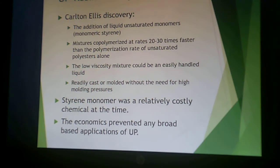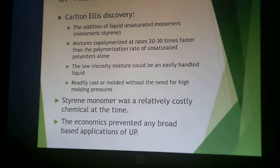Along came Carlton Ellis, who added liquid unsaturated monomers — specifically monomeric styrene. He could co-polymerize the unsaturated polyester with monomeric styrene at rates 20 to 30 times faster than just the unsaturated polyesters by themselves. This also resulted in a low viscosity mixture that could be handled as an easily flowing liquid, so it could readily be cast or molded without the need for high molding pressures. However, styrene monomer was still priced like a fine chemical at that time, which prohibited further development.